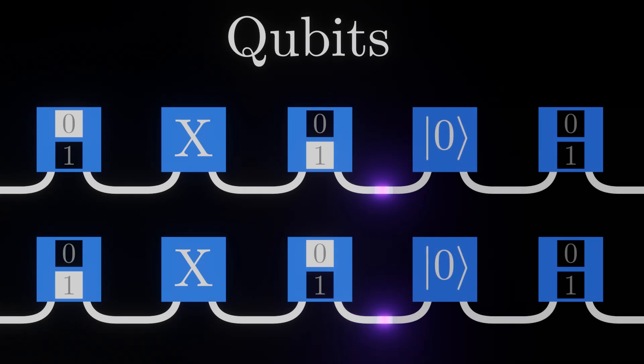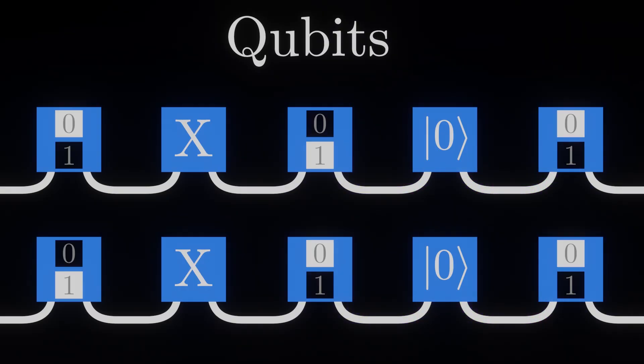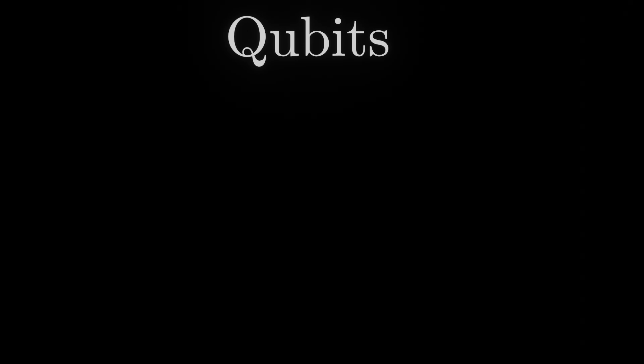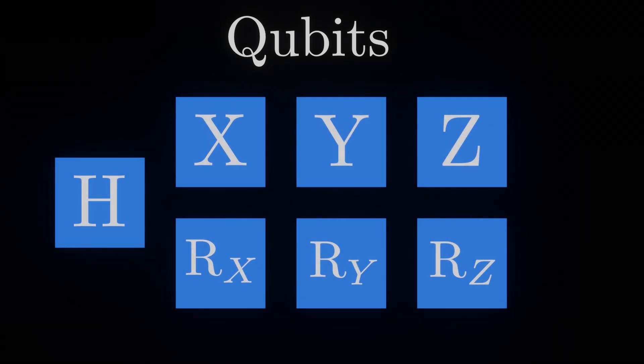Passing a qubit through a reset gate will cause it to always be measured as 0. However, the effects of quantum logic gates extend beyond what's possible with their classical counterparts. To see this, we'll experiment with a variety of additional gates that produce strange effects, revealing the true nature of qubits in the process.